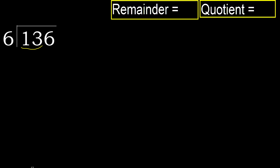therefore work with 13 and 6. Multiply by which number is nearest to 13 but not greater. Multiply by 3 gives 18 — that's greater. Multiply by 2 gives 12, it's not greater, ok. Subtract: 13 minus 12 is 1. Next.